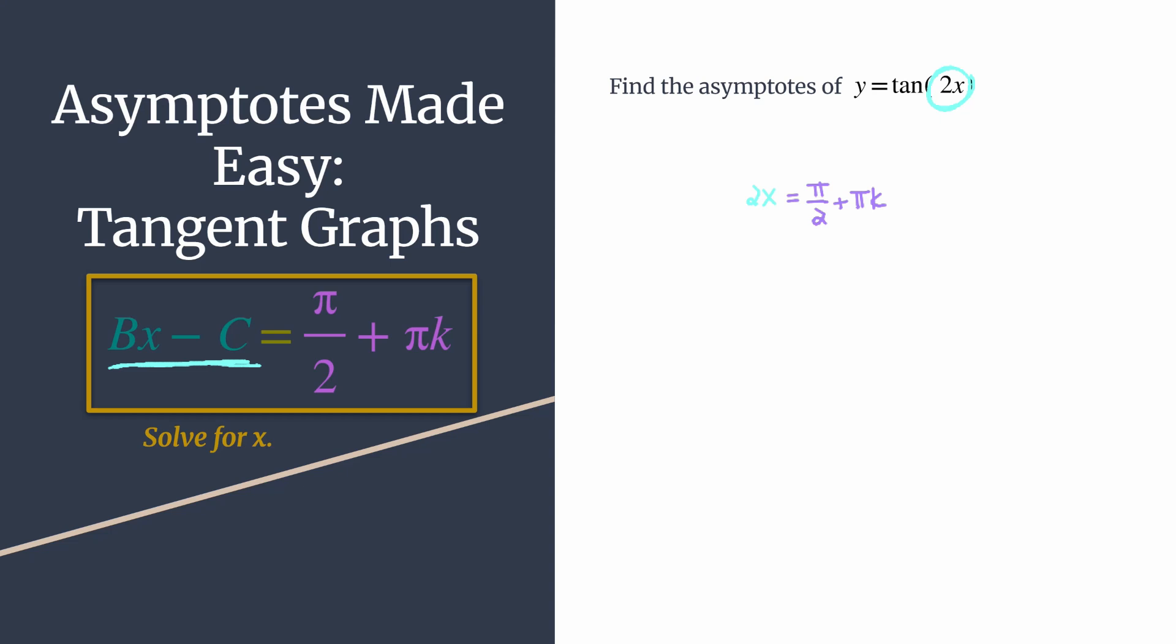From here, all you have to do is solve for x, and you'll have your equation for all the asymptotes of tan(2x). To solve for x, all we have to do is divide both sides by 2. Just make sure you divide every single term. Sometimes I like to say multiply by 1/2, or just divide by 2. Let's clean that up to get our equation. It's x = π/4 + (π/2)k.